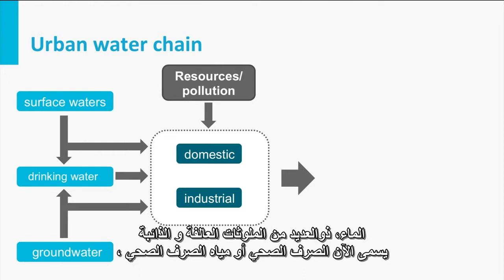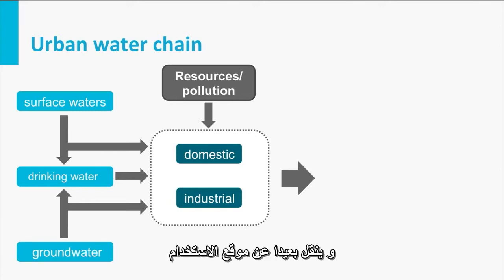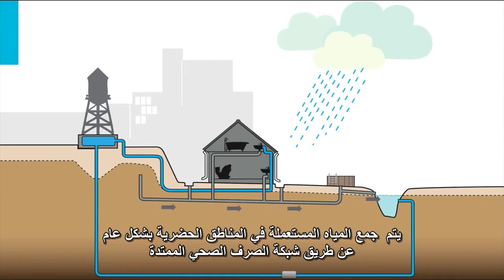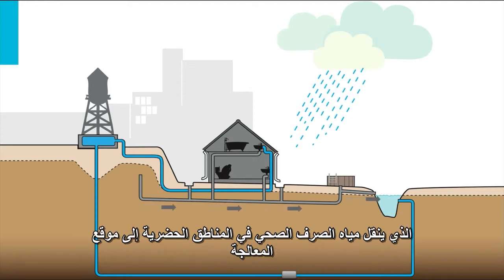The water, with its suspended and dissolved pollutants, is now called wastewater or sewage and is carried away from the site of use. Collection of the used urban waters is generally done by means of an extensive sewage network, which conveys the urban sewage to the site of treatment.